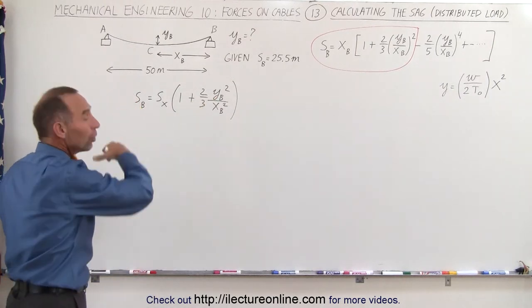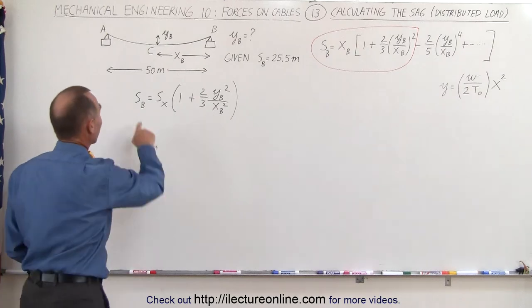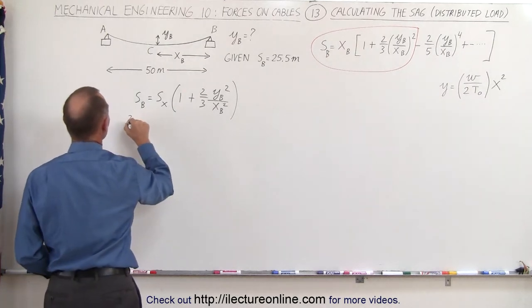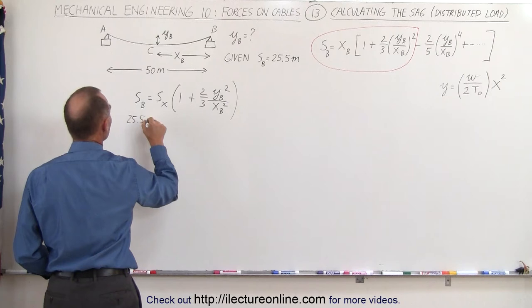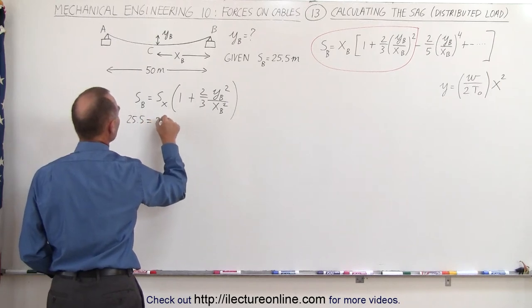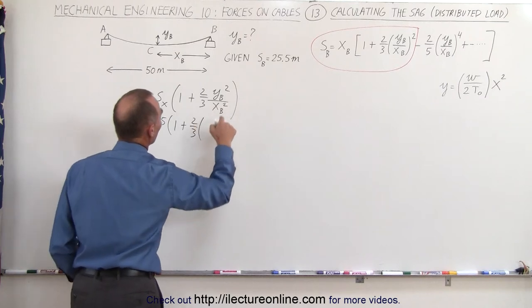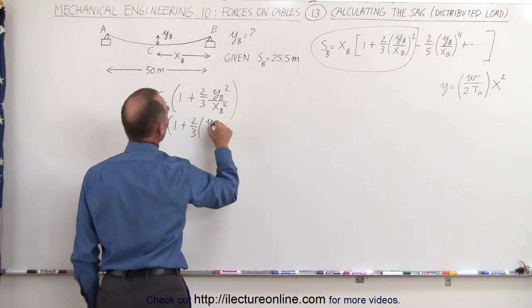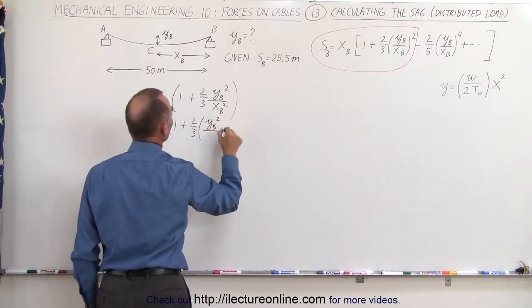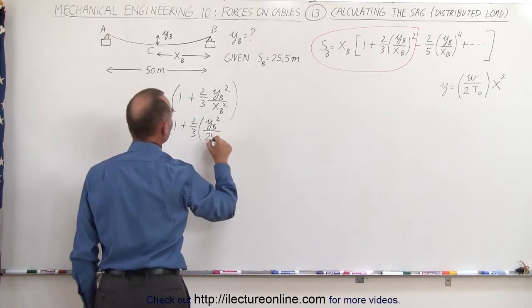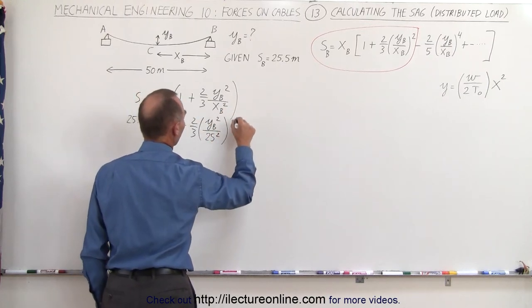Okay, let's plug in all the numbers and then go from there. So S sub B is going to be 25.5, that's in meters, equals 25 meters times one plus two-thirds times Y sub B is the unknown, so we write Y sub B quantity squared divided by X sub B, which is going to be 25 squared, like so.